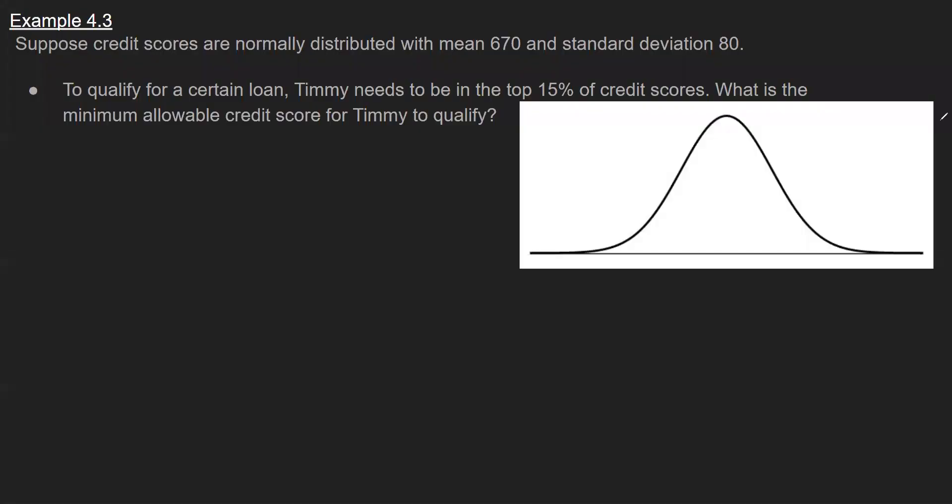So the continuation of this problem works with the same distribution. So again, we have our credit scores will be X. You're given that X is normally distributed, a mean of 670, so the x-axis here centered at 670, standard deviation of 80. This time the question is a little bit different. We're not finding probabilities or percentages. You are asked instead, what's the minimum allowable credit score for Timmy to qualify? So Timmy's going out for a loan.